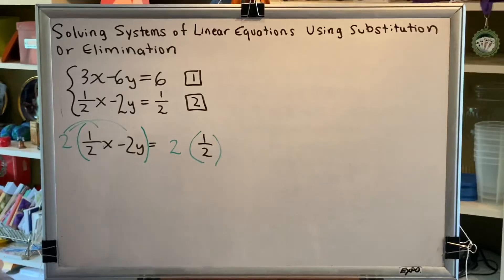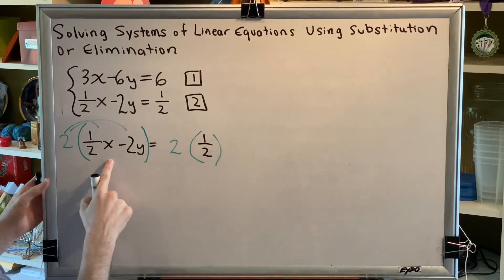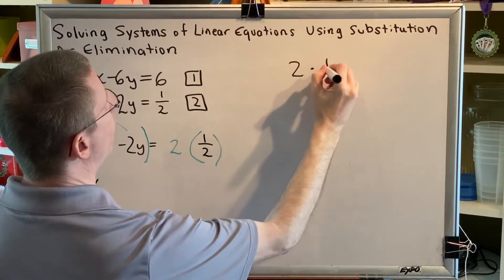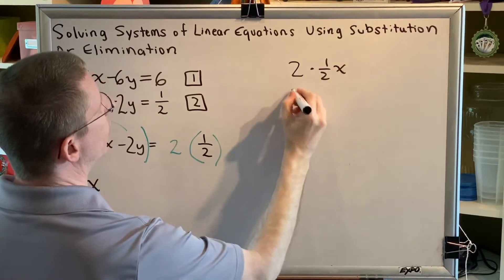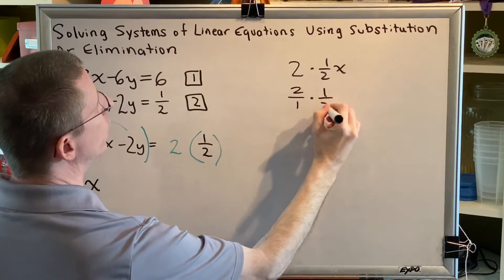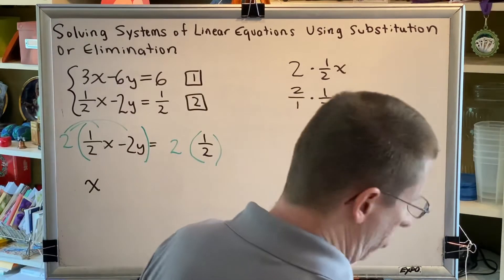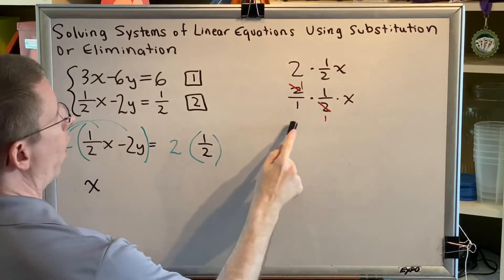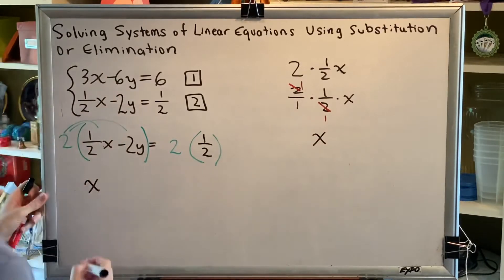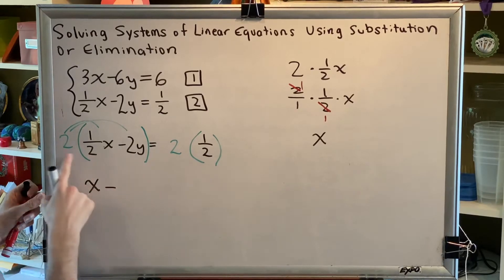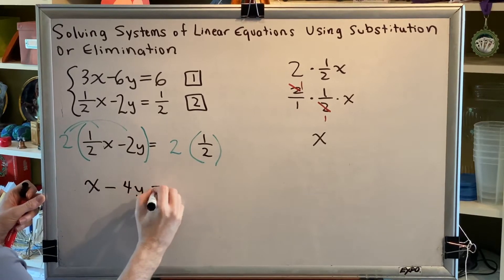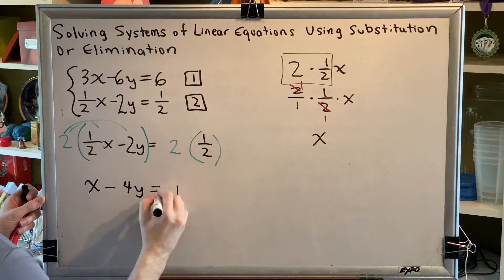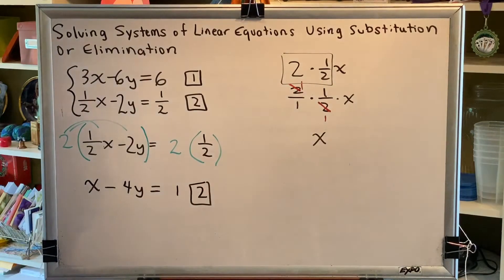Okay, so let's go ahead and do this. We've got 2 times one-half times x. That's simply going to leave us with x. Let's show the work on the side. 2 times one-half x is the same thing as 2 over 1 times 1 over 2 times x. These 2s are going to cancel to the number 1. And so I get 1 times 1 times x, which is simply x. When I distribute the 2 here, I have subtract 4y. And 2 times one-half gives us 1.